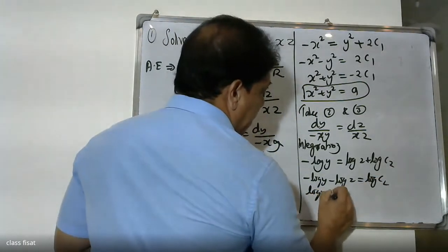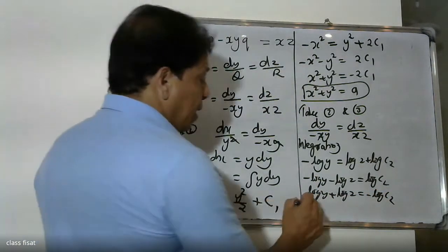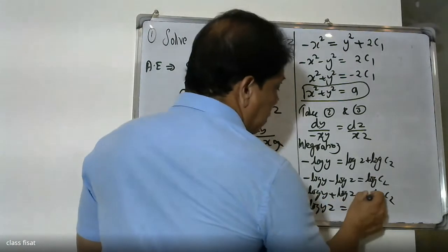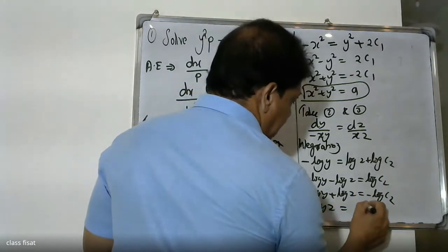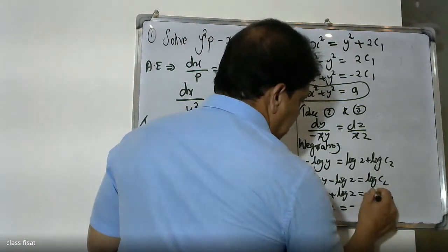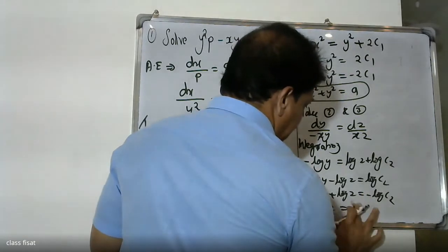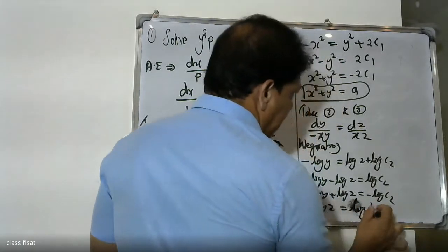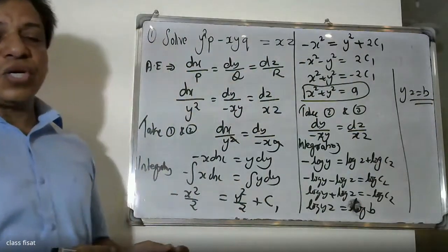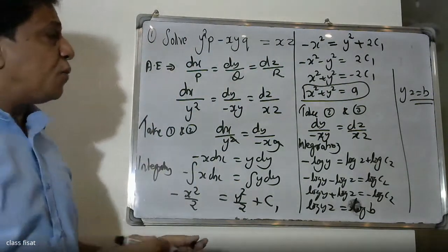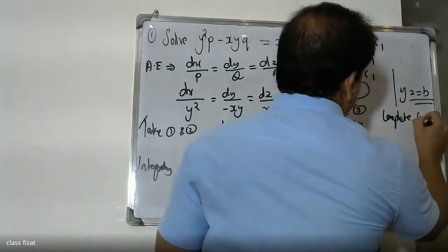After integrating: minus log y minus log z equals log c2. Therefore log y plus log z equals minus log c2. Using log a plus log b equals log ab, we get log yz equals log b, therefore yz equals b.